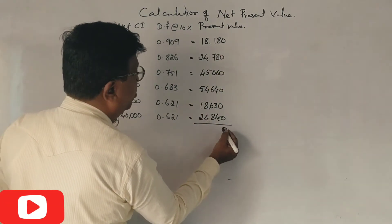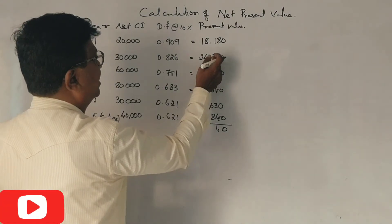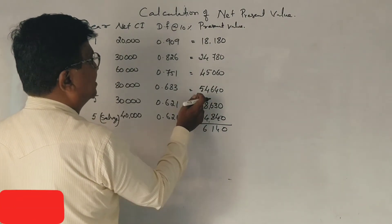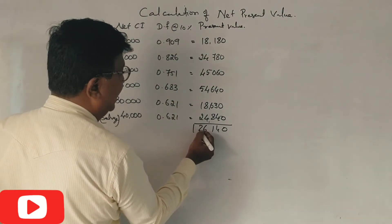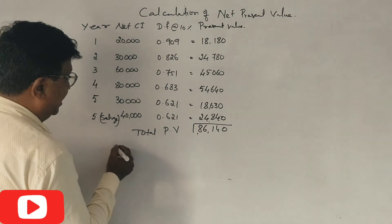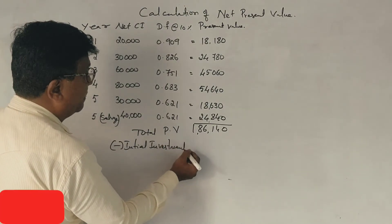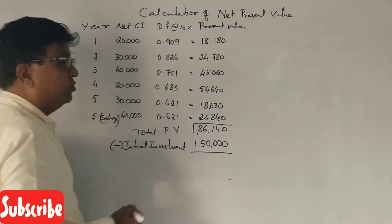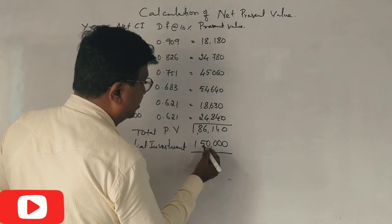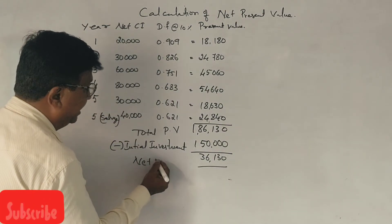Now the total. Total: 11, 17, 26, 34. Adding up: 18, 24, 45, 54, 24. So 1,36,130. One lakh thirty-six thousand one hundred thirty rupees is the net present value.